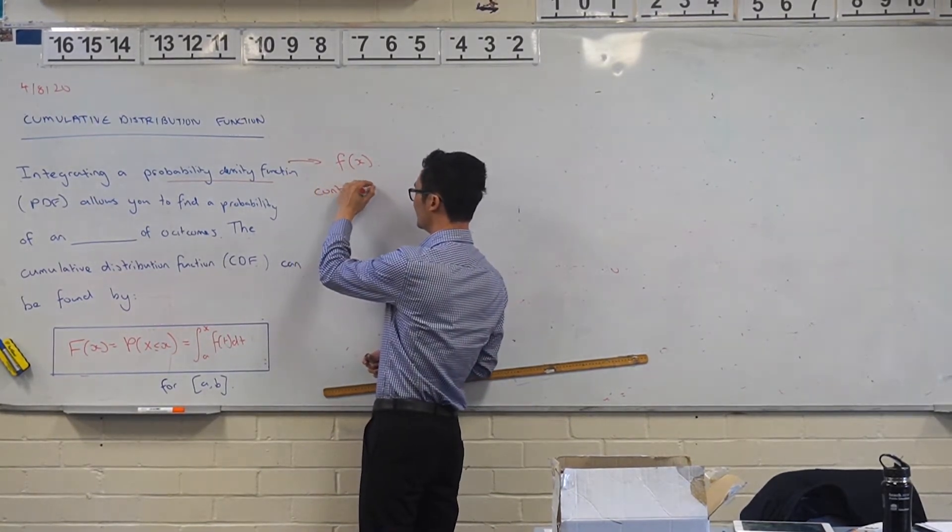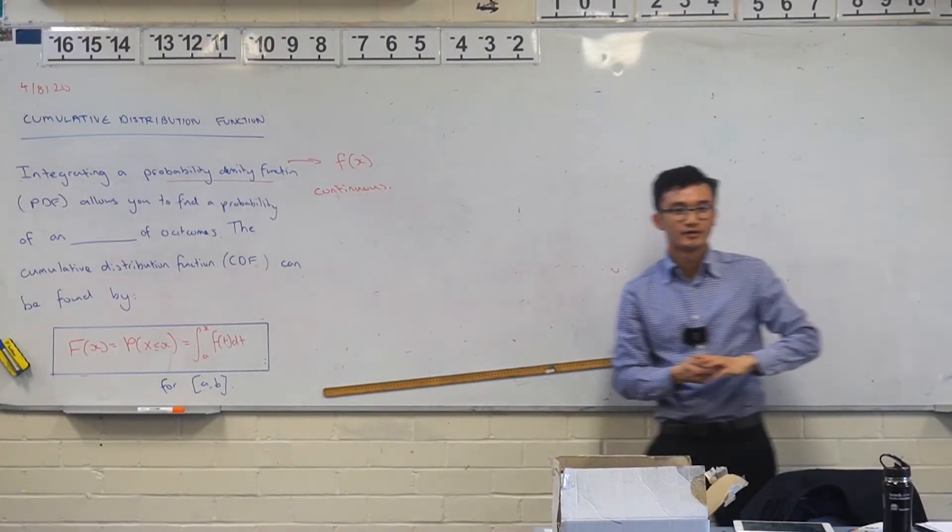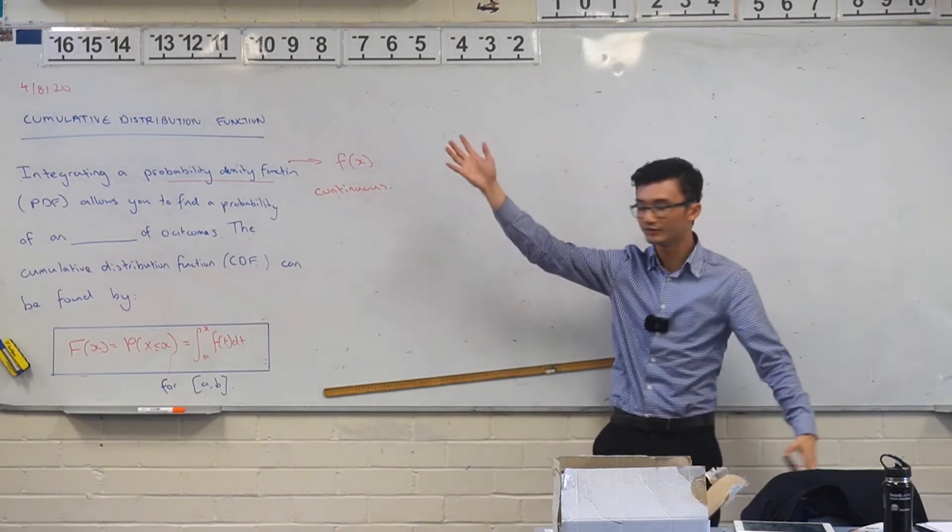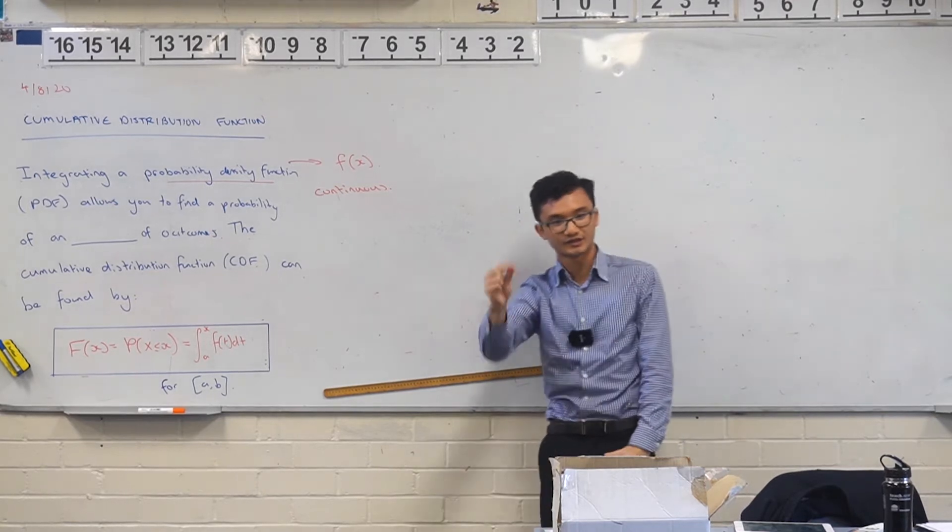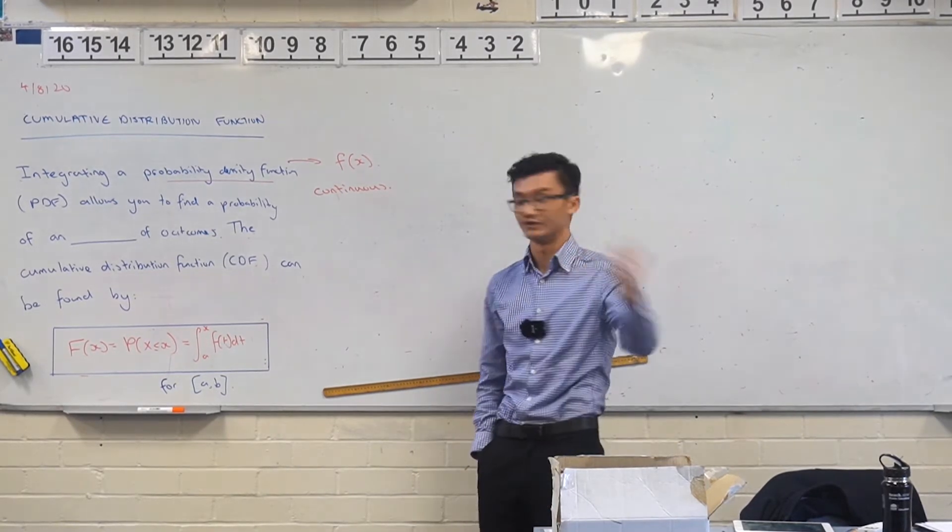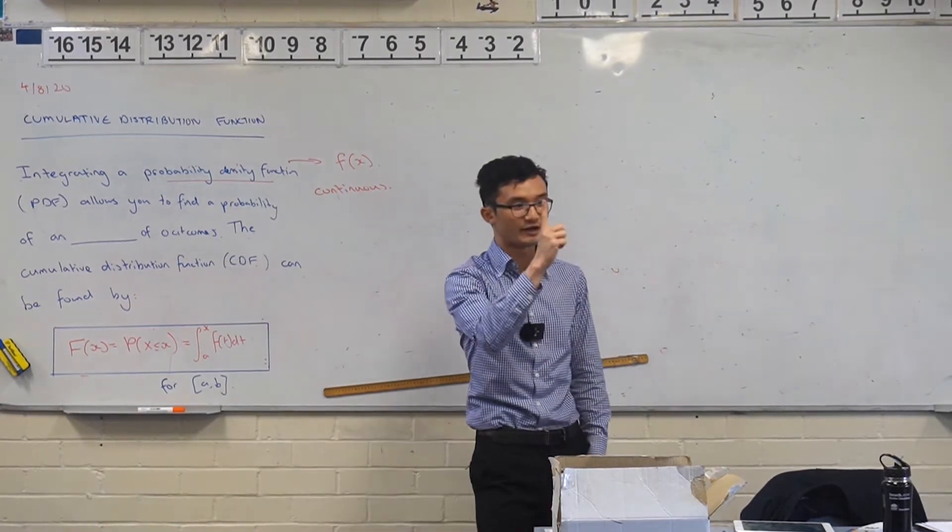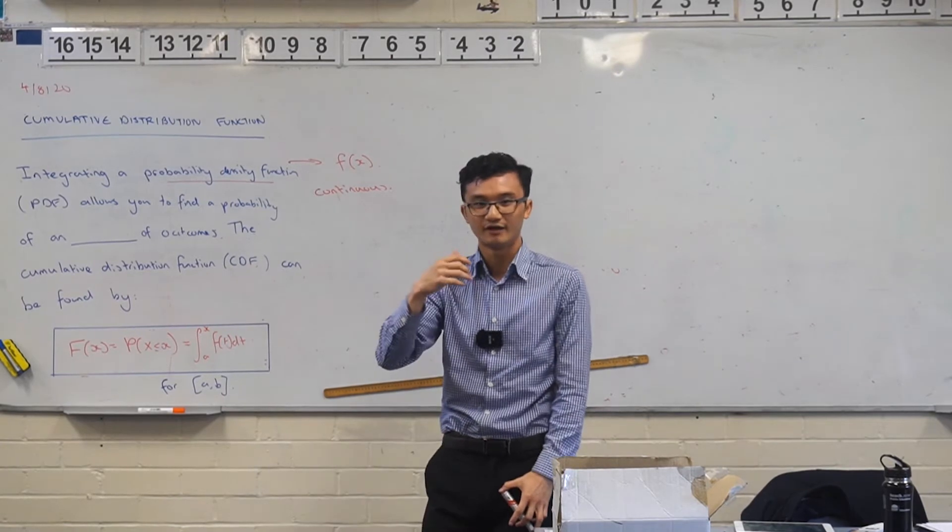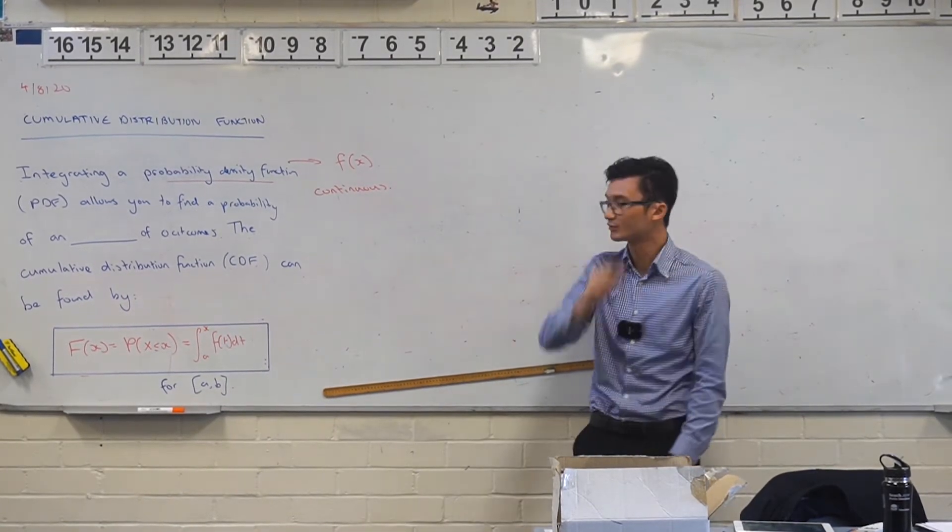So what's an example of a continuous variable? Height, right? Because height, technically although you measure like 168, 180, technically you can have even small increments of that. And that's continuous. Time is another good example. Because of that you can't find the probability of one outcome. Like I can't technically, mathematically at least, find the probability that I am 166 because I'm probably not exactly 166. I'm probably some small increment of that.